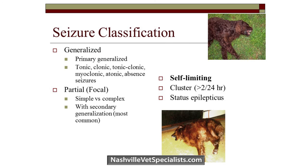Seizures are classified based on their clinical manifestation. Generalized seizures usually involve a loss of consciousness and can be tonic, tonic-clonic — what was previously called grand mal — or even absence seizures where there isn't necessarily convulsive activity. Absence seizures can be very difficult to recognize and sometimes can only be proven by EEG.